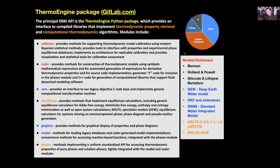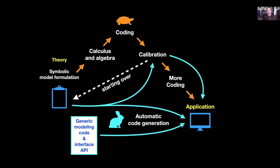One of the things the Enki package is really aimed to deal with is the workflow associated with the generation of thermodynamic models. Thermodynamic models are notoriously difficult to generate because they involve first developing theory, then doing an enormous amount of calculus to derive all the equations for all the thermodynamic properties, coding those up by hand — which is fraught with the possibility of error — doing calibration based on that code, and usually starting over from the beginning. This workflow typically corresponds to a process of six months to a year and a half for any model of any sort of complexity.